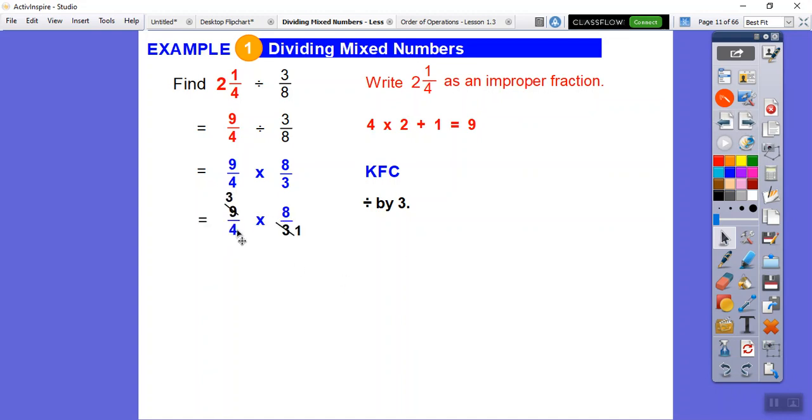And then take a look at these. We can divide these guys by 4. 4 goes into 4 once, 4 goes into 8 two times. Then we just multiply top times top over bottom times bottom. 3 times 2 is 6, 1 times 1 is 1. So 6 over 1 just equals 6.